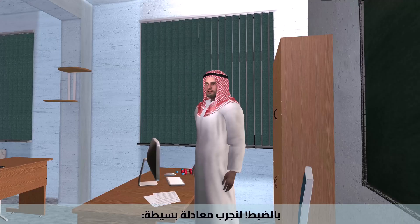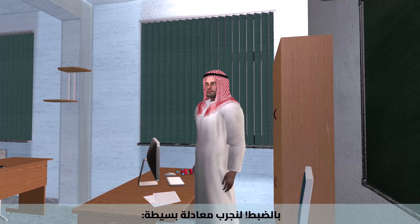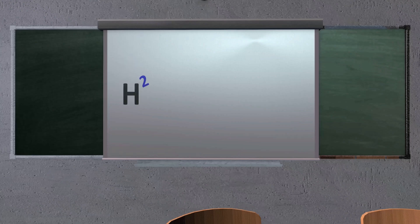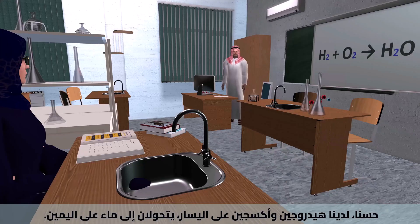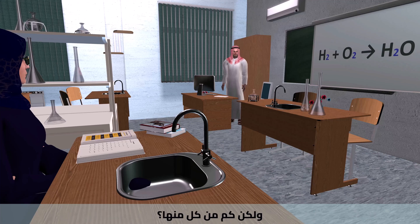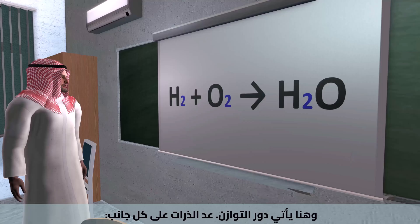Let's try with a simple equation: H₂ plus O₂ produces H₂O. We have hydrogen and oxygen on the left, turning into water on the right. But how much of each? That's where the balancing comes in.